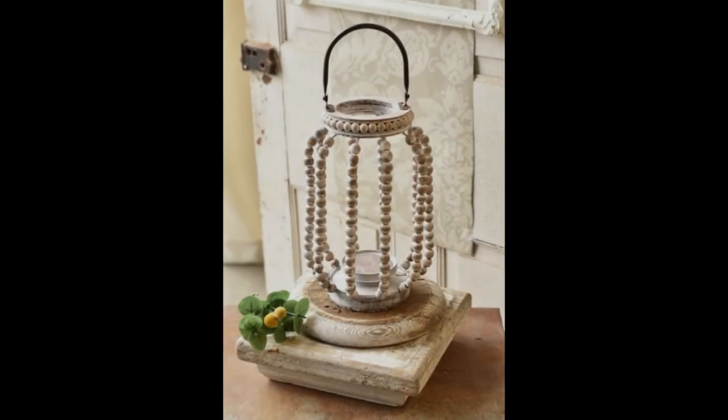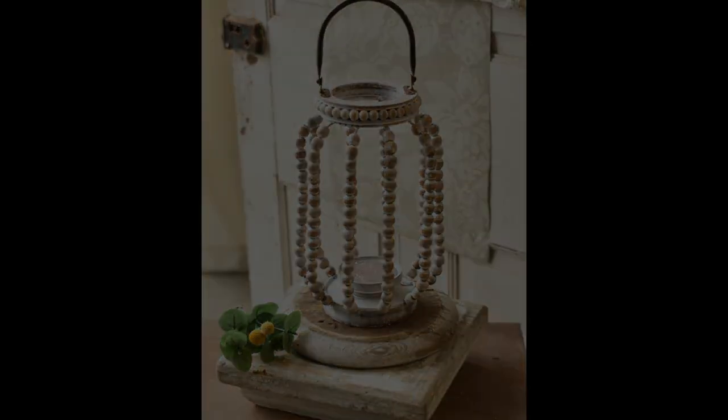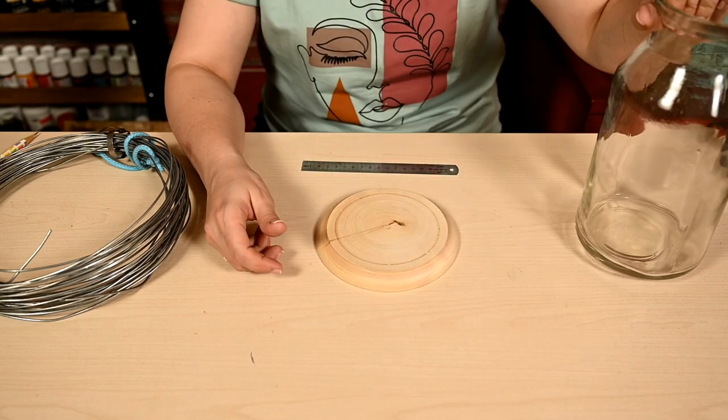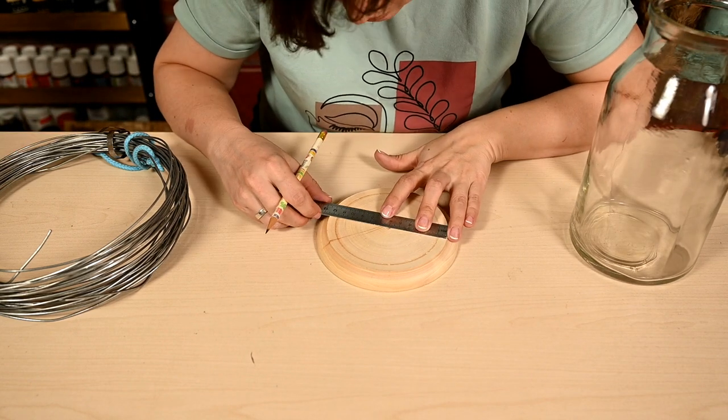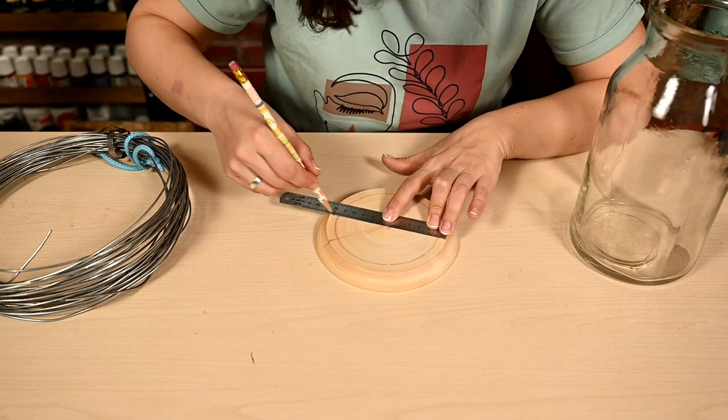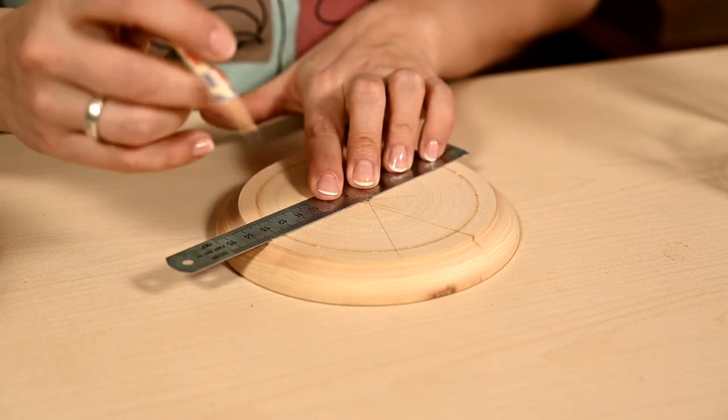And the third lantern for today is this lovely beaded lantern from Laurel Grove Shop. As a base for this lantern I'm using a wooden plate again. You can also use any wooden circle and I'm using a large glass drawer. I'm dividing the plate into six parts in order to arrange the lantern supports evenly.